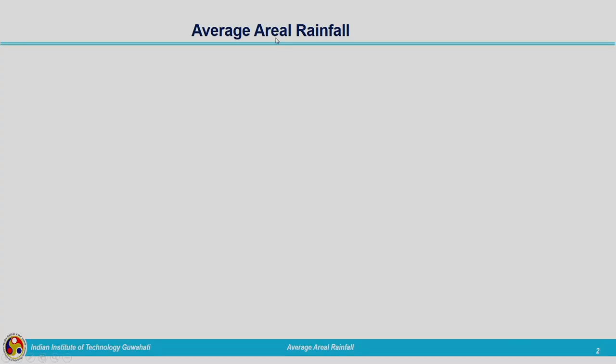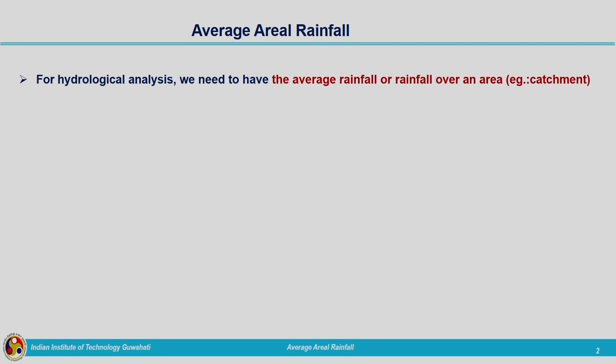We are installing the rain gauge at a particular location and the data obtained from the rain gauges we were analyzing, but it is giving us the point rainfall data. How can we convert this data into one which is representative of a catchment or an area? That is, we need to have a methodology to calculate the average aerial rainfall which will be a representative value corresponding to a particular area — that we will see in this lecture.